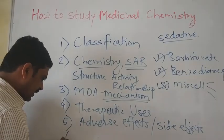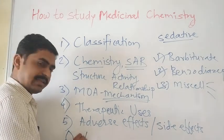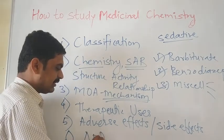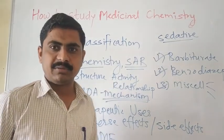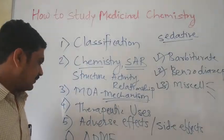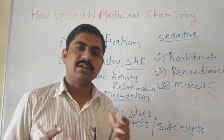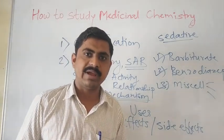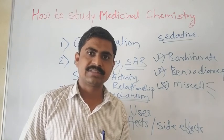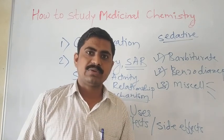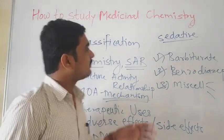The sixth point is ADME — that is, absorption, distribution, metabolism, and excretion of a particular drug. Metabolism of the drug is particularly important: whether the drug is metabolized by oxidation, reduction, hydrolysis, glucuronide conjugation, or alkylation.